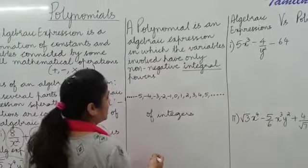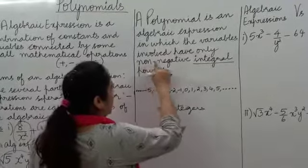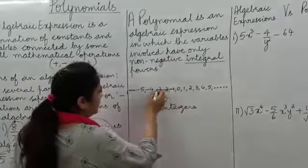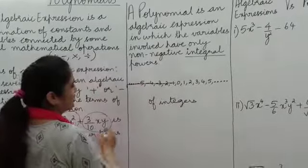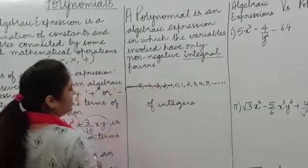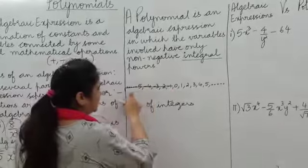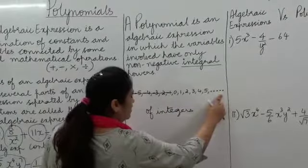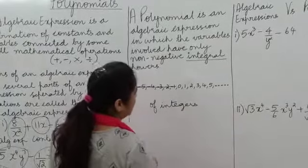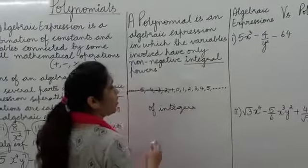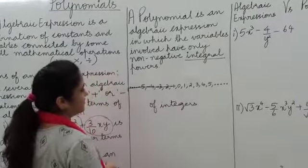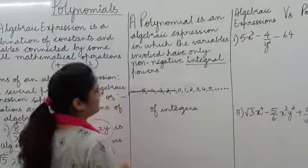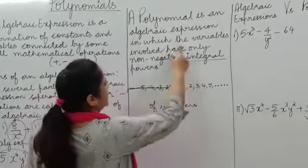So how do we get the collection of non-negative integers? We remove all the negative integers — that is, the integers that lie to the left of 0. Now we are left with the collection of non-negative integers. And what is this collection called? Whole numbers. This collection is called whole numbers.